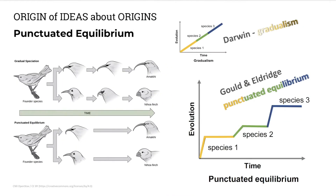On the other hand, Gould and Aldridge proposed a more recent theory to explain the gaps in the fossil record. They suggest sudden changes to form new species — punctuated — and then long periods of no change — punctuated equilibrium.